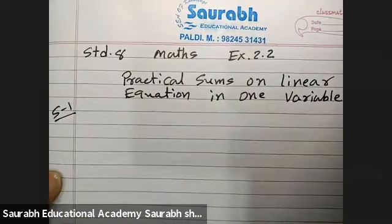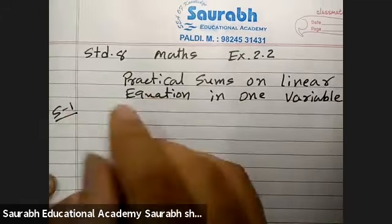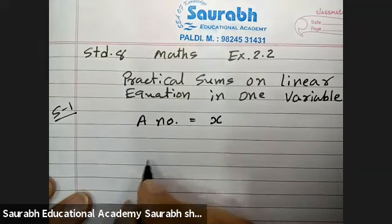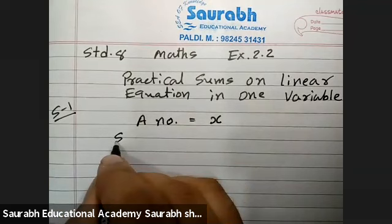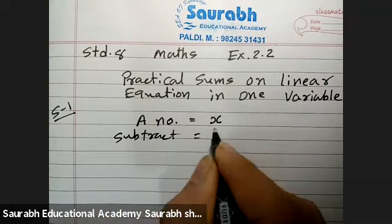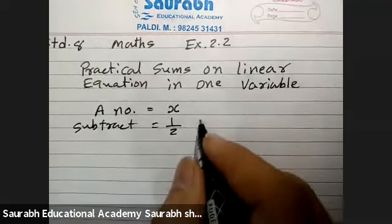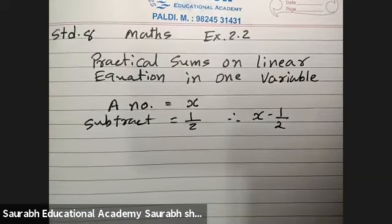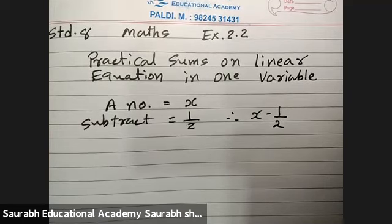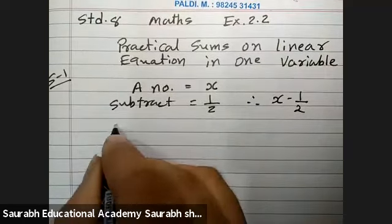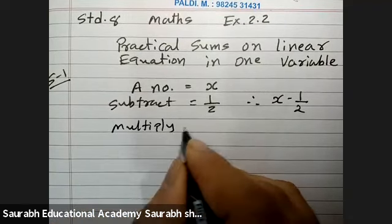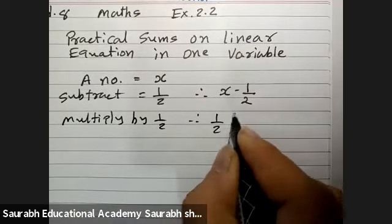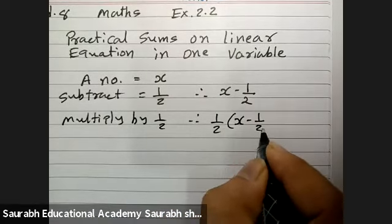First, if you subtract one half from a number, let's assume the number is x. We are subtracting one half, that is x minus 1 by 2. The result, multiply by 1 by 2. Therefore, 1 by 2 into x minus 1 by 2.